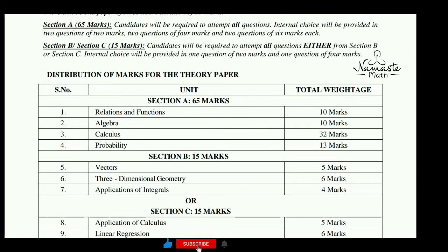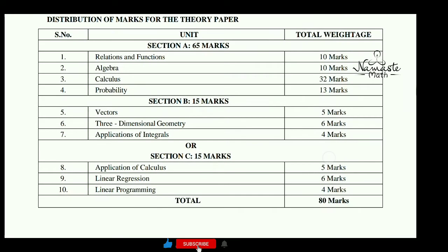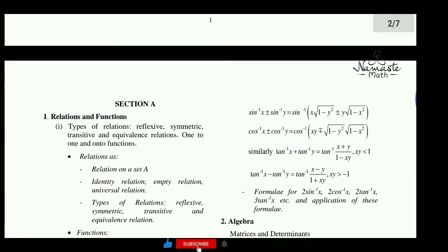The mark distribution is given below. For section A, 65 marks have been allotted, and section B and section C each have 15 marks separately. You have to answer either B or C.